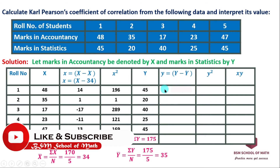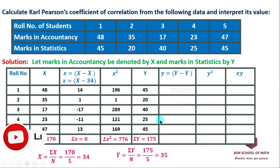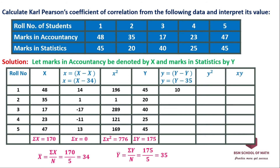With y-bar equal to 35, we compute the small y deviations. For example, 45 minus 35 gives plus 10; 20 minus 35 gives minus 15; 25 minus 35 gives minus 10. Some values are positive and some are negative, as expected for deviations from the mean.